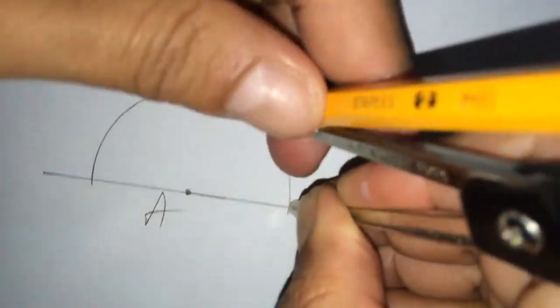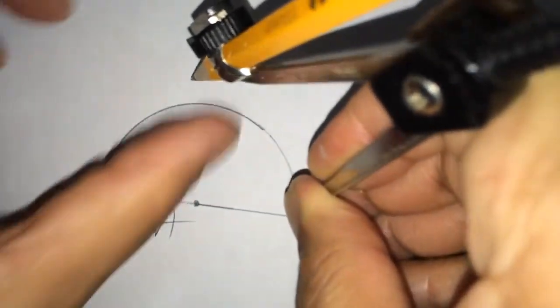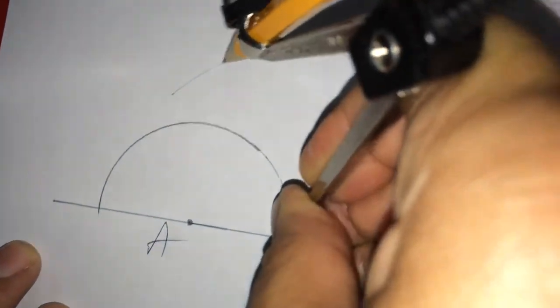Then, this time, this point as center, you just increase this radius a little bit. Draw an arc like this.